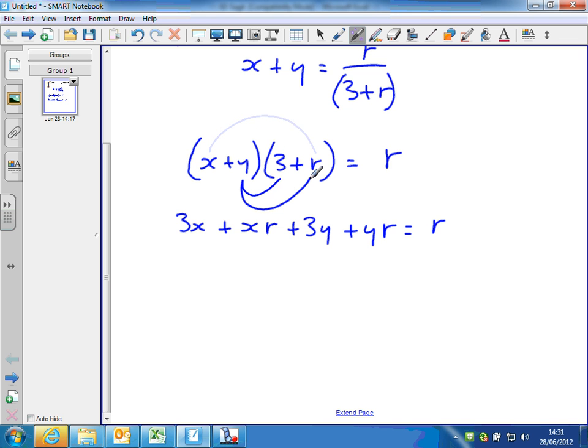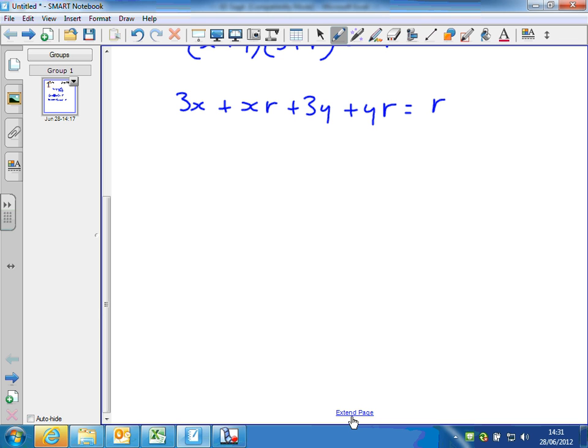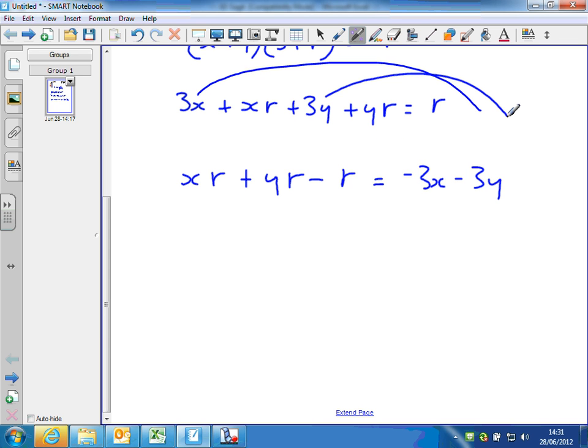So now we want to get all the terms involving r on one side, the left hand side, and all the terms that don't involve r on the other side, on the right hand side, by just adding and subtracting. So I'm going to get xr plus yr minus r equals minus 3x minus 3y. So what I've done is I've subtracted r from both sides to get r over here to minus r, and then I've taken the 3x to the right hand side by subtracting it from both sides. So minus 3x from both sides, minus 3y from both sides, and you get that.